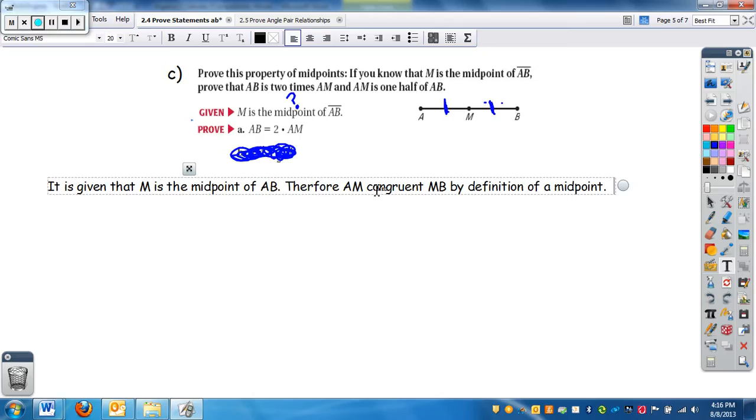So again, going back, we have congruent. Why do I know something that's congruent? Well, if something's congruent, they're also equal. And I need the equal because of the equal right here. So then, by definition of congruence, AM equals MB. We're slowly making our way to it. We have, but somehow I need two times AM.